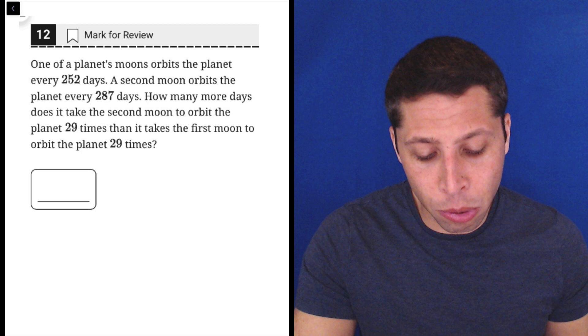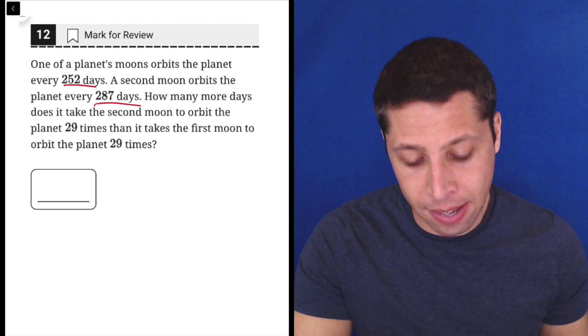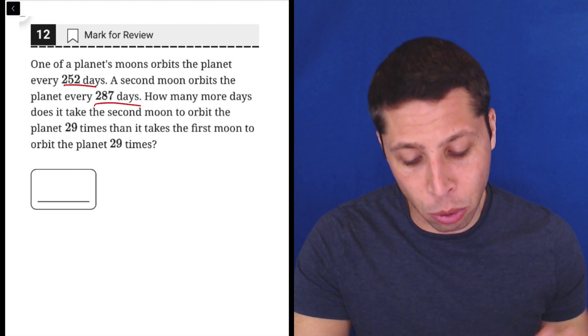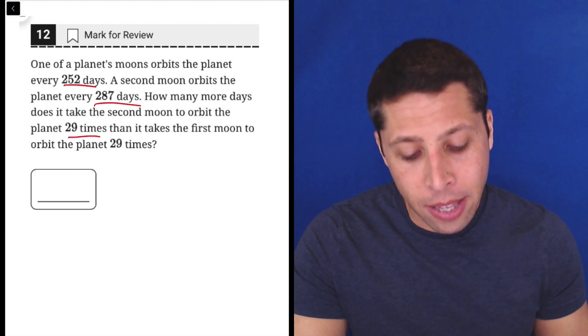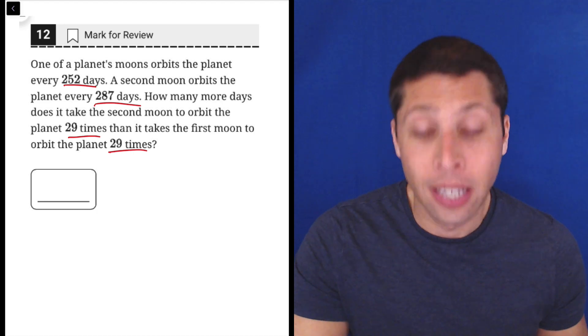One of the planet's moons orbits the planet every 252 days. A second moon orbits the planet every 287 days. How many more days does it take the second moon to orbit the planet 29 times than it takes the first moon to orbit the planet 29 times?